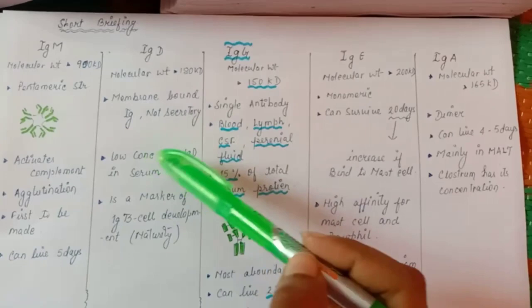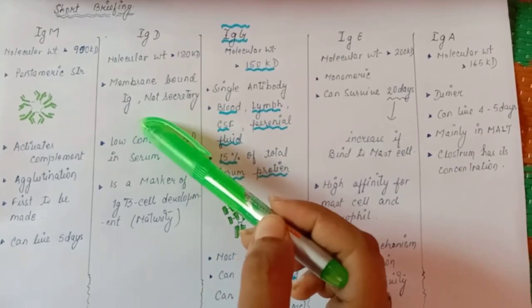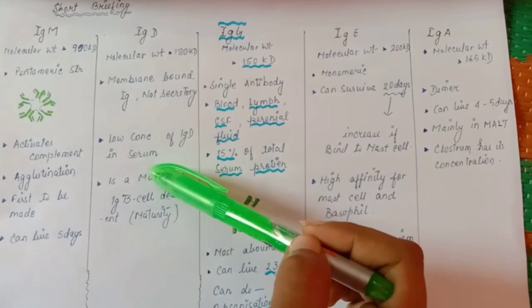Now see about IgD. The unique feature of IgD is it is a membrane bound immunoglobulin, not the secretory one. Very low concentration is found in serum as it is membrane bound. This is the marker of B cell maturity also.